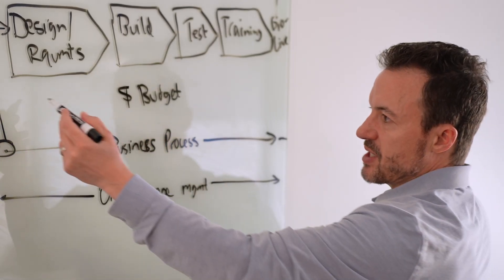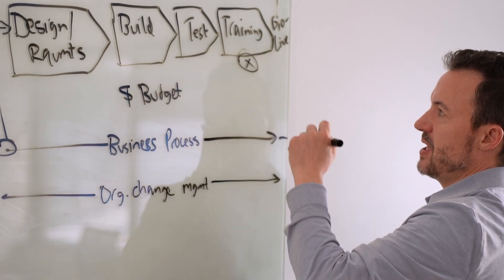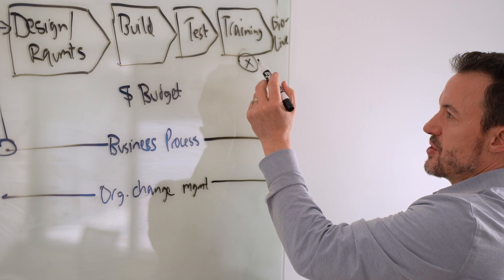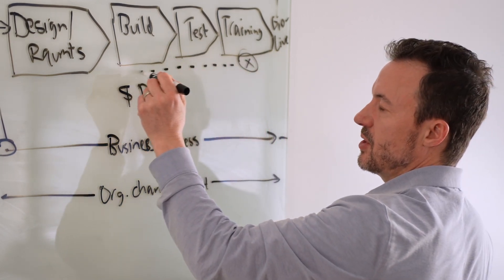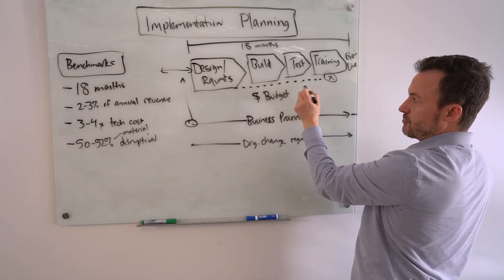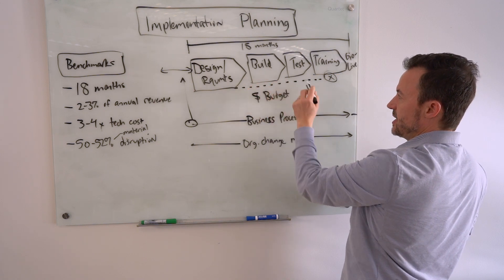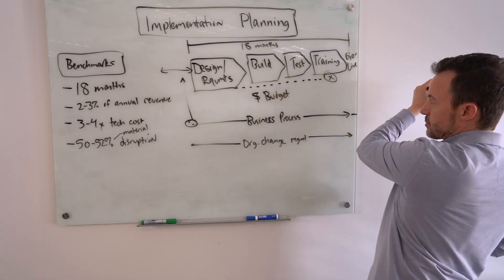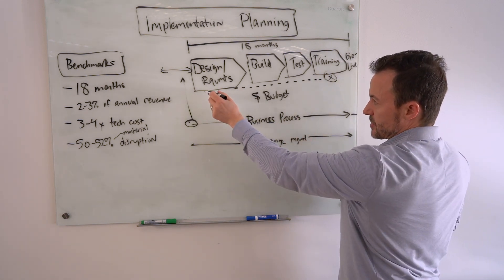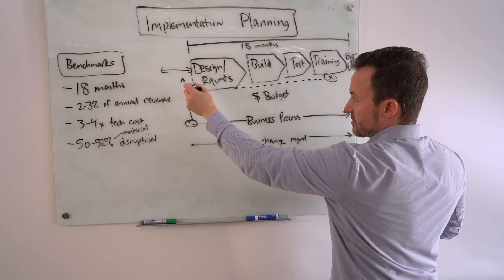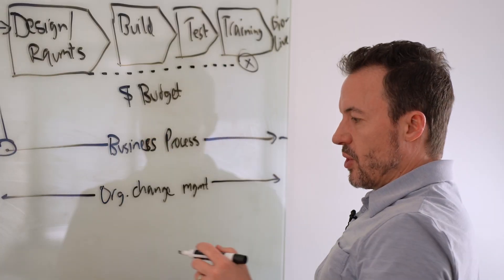Another critical missing component is organizational change management. Change management needs to be happening in parallel throughout the entire implementation — not just at the training phase. If you wait until late in the project to address change management, you've allowed resistance to build up along the way. Starting change management as early as possible — during the pre-implementation and business process phases — is essential to keeping the project on track.